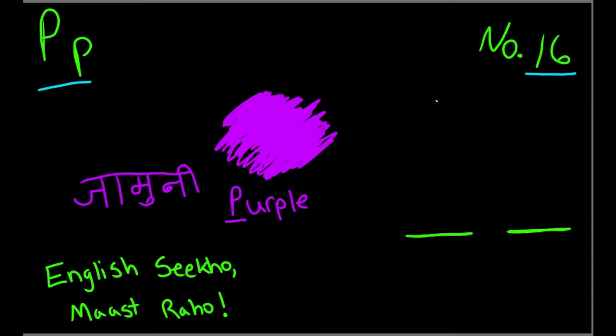You remember O and how we made it like this. Now we will learn a word from P. The word is purple. Purple is a color.